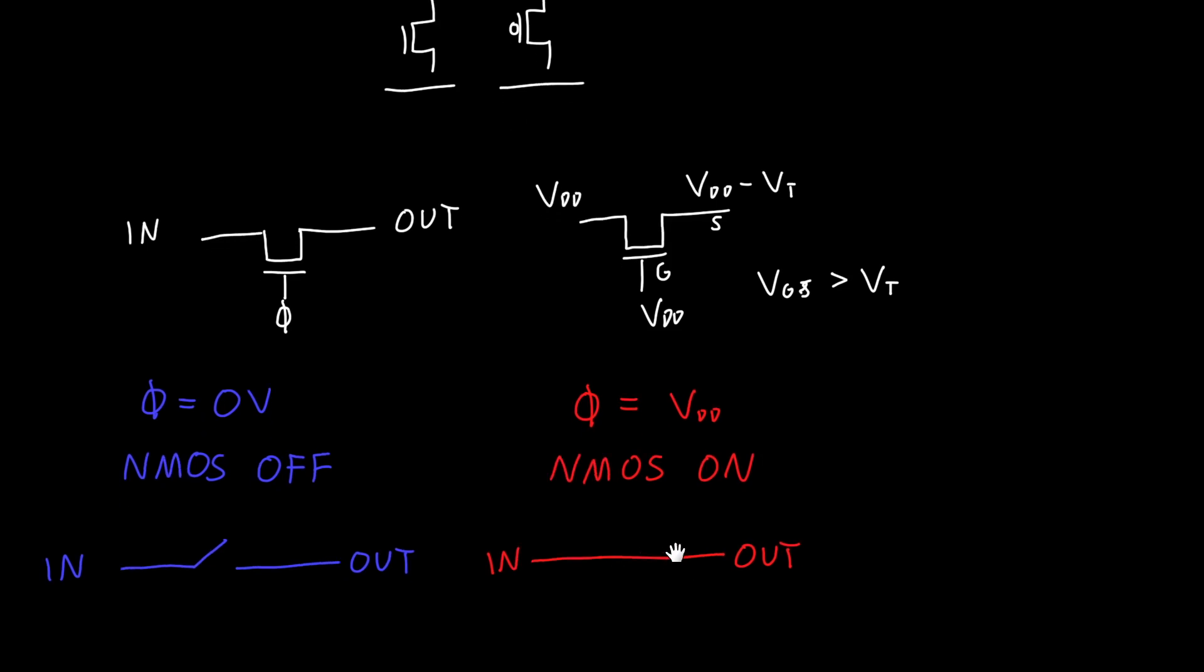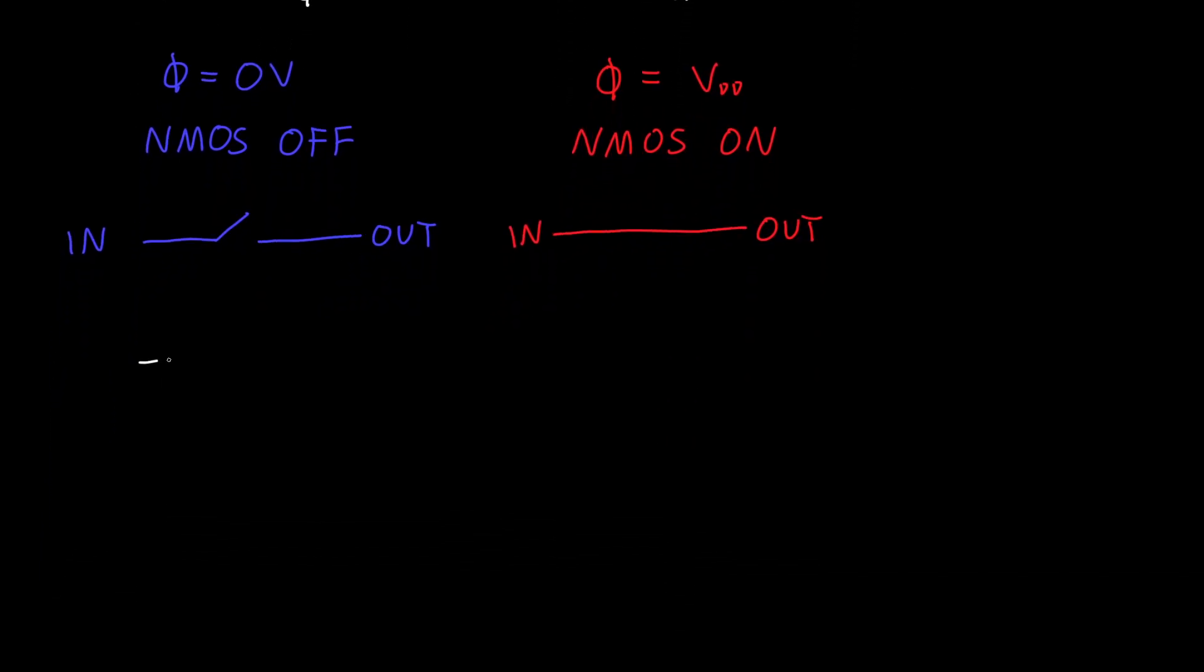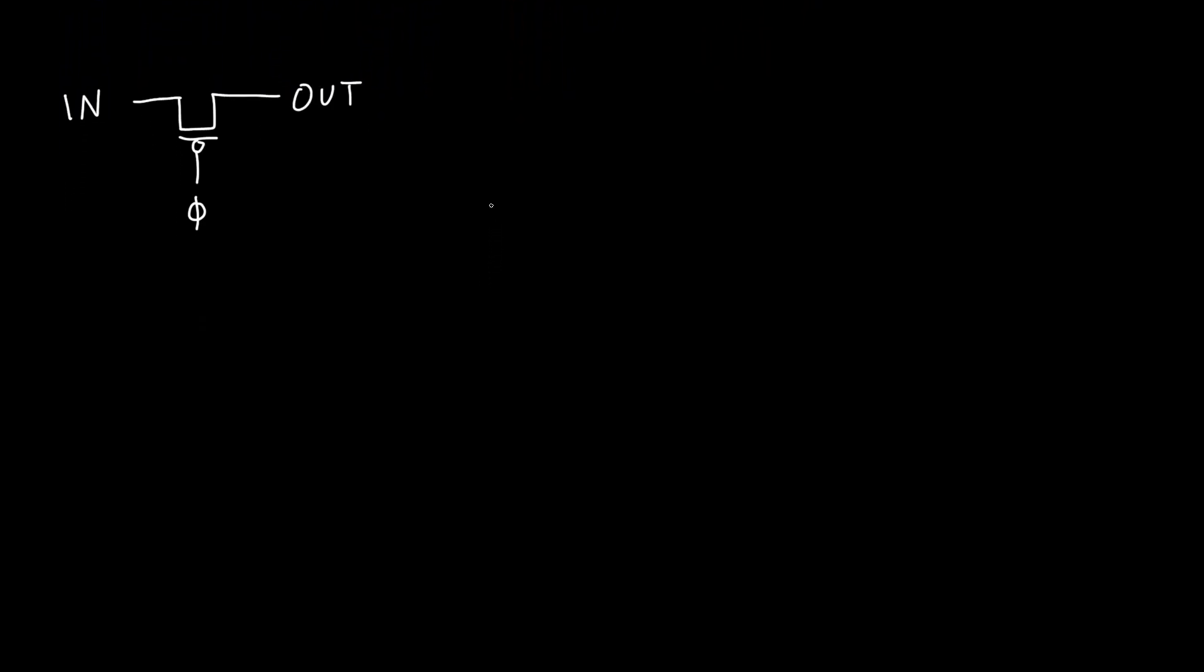What happens if we instead use a PMOS? So you might say, well, you know, NMOS doesn't seem to work. Let's try a PMOS. So if we have our PMOS and this is our control signal phi, we've got our input and our output. Then what happens when our control signal phi is equal to one?